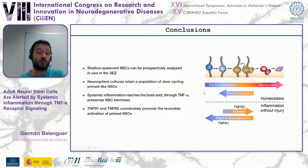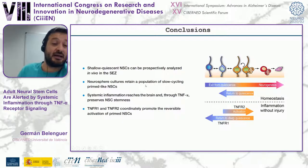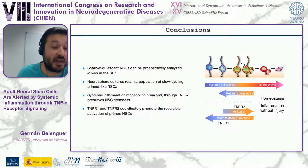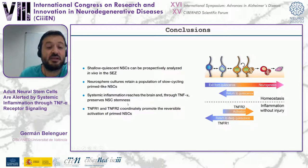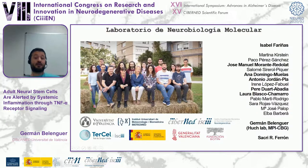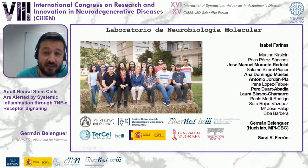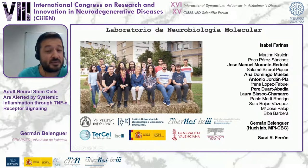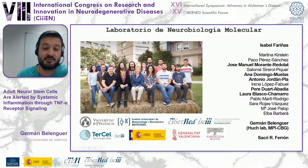To conclude: with this protocol, shallow quiescence can now be positively analyzed in vivo in the subventricular zone; neural stem cells retain a population of low-cycling quiescent cells; systemic inflammation reaches the brain and TNF-alpha regulates neural stem cells; and TNFR1 and TNFR2 coordinate quiescent-to-active cycling in neural stem cells. I would like to especially thank Isabel Fariñas for the opportunity and for being my scientific mom, Jose Manuel Morant-Tavedola for being my scientific dad, and Ana Domingo and Peri Duarte who helped along with the project. Thank you very much.